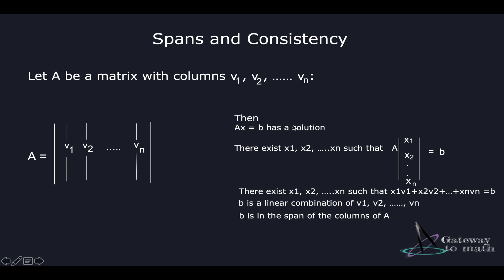We've been discussing matrices and vectors in the past few lecture series. Let's assume we have a matrix A with columns v1, v2, ..., vn. Then Ax = b has a solution only when the following conditions hold true.